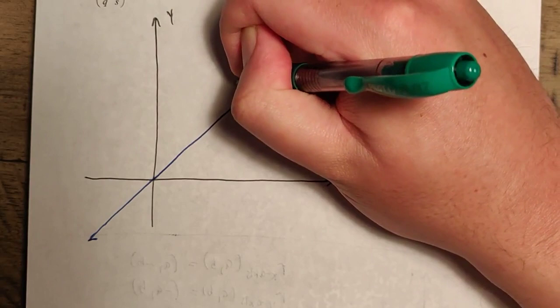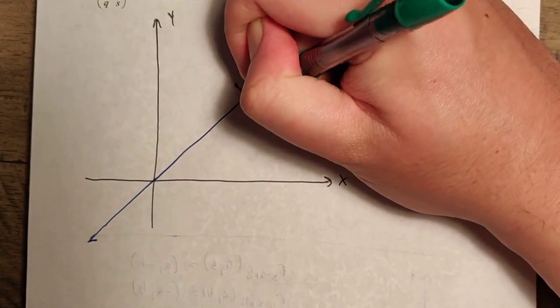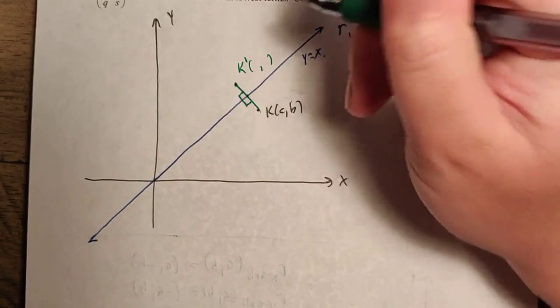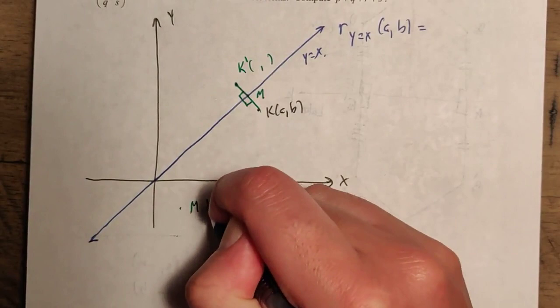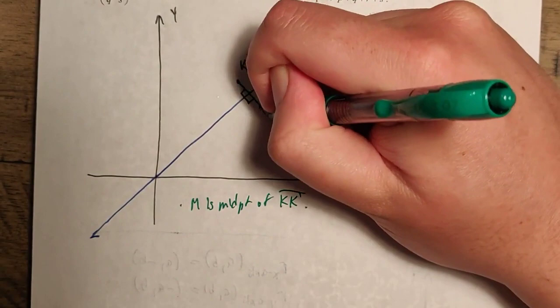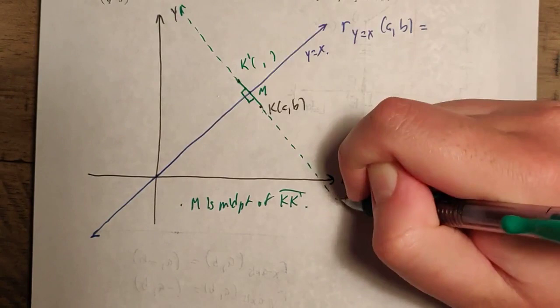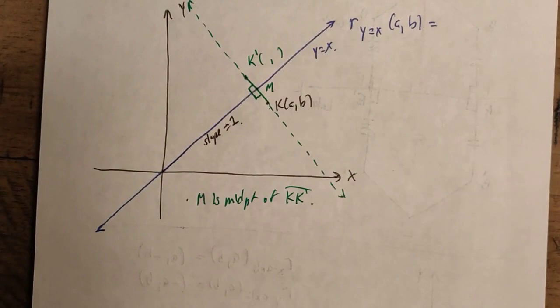K prime is going to be somewhere over here. If we draw K to K prime, we want this line to be a perpendicular bisector, which means this point M needs to be the midpoint of K to K prime. Now, since line KK prime is perpendicular to y equals x, and y equals x has a slope of 1, the slope of KK prime is going to be negative 1 divided by 1, which is negative 1, because perpendicular lines have slopes whose product is negative 1.